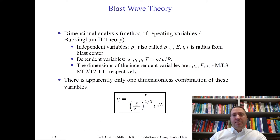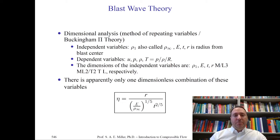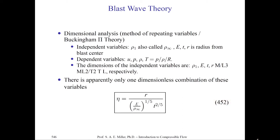Let's identify the independent variables in the blast wave problem. We know ρ₁ is the ambient density, ρ_∞. We also note the energy released E, the time t, and r, the distance from the blast center. These are the independent variables for strong shocks. Their dimensions are respectively: mass per length cubed, mass times length squared over time squared, time, and length. Through Buckingham Pi theory, there is only one non-dimensional parameter from these combinations.